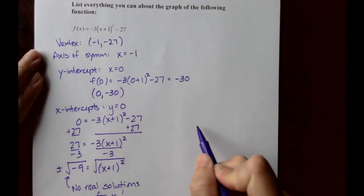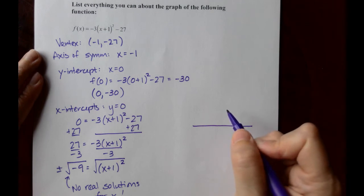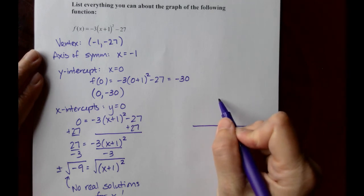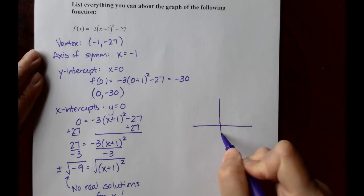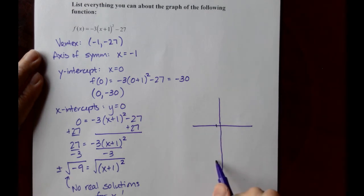We had a vertex of negative 1, negative 27. So down very low, negative 1, negative 27. And then a y-intercept of 0, negative 30.